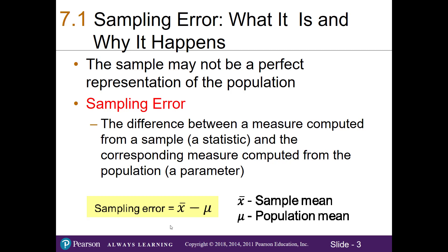The sampling error is the difference between a measure computed from a sample, known as a statistic, and the corresponding measure computed from the population, known as a parameter. Here we've got our formula for our sampling error where we'll take our sample mean minus our population mean: sampling error = x̄ − μ.